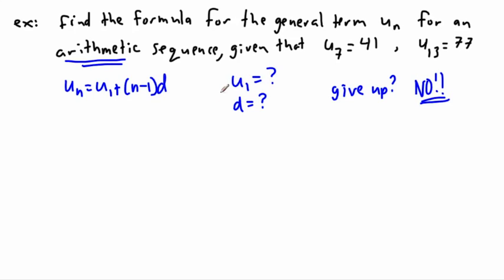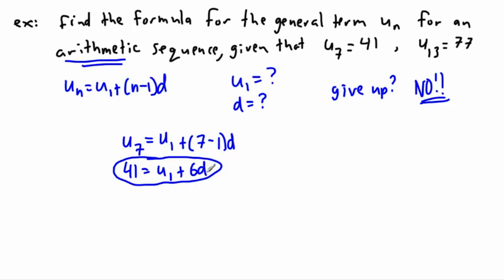We're actually going to just figure out what we can. So let's use this first bit of information here, u7. Well, if we did that, then we would know that u7, let's just use this generic equation here. u7 would be equal to u1, which we don't know, plus 7 minus 1, all that times d, which I don't know. And furthermore, I know that u7 is equal to 41. So I can say that 41 equals u1 plus 6d. So this is all I know here.